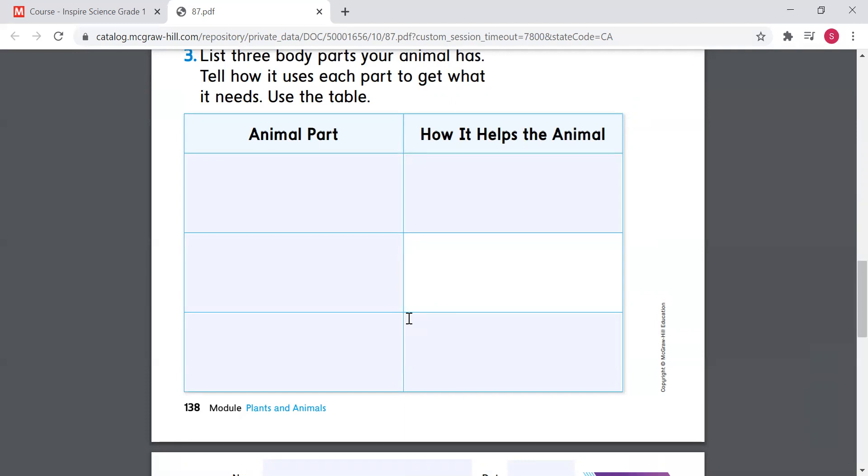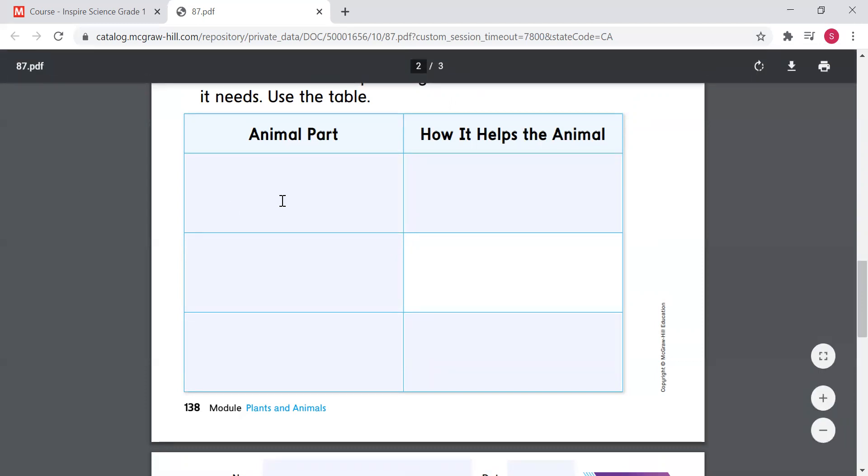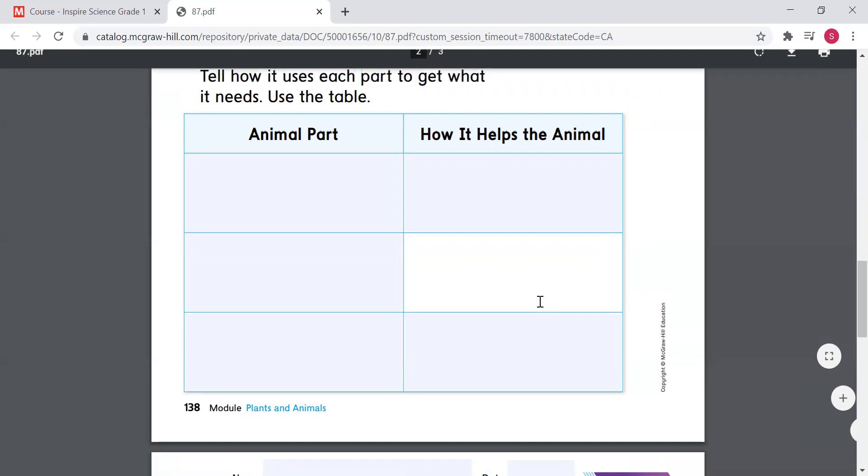For you, you can say you choose something else. Let's say if you put the body part mouth to help the cat or the dog to eat, you can choose here the legs. And you can say the hands and legs, the animal part. And over here, how does it help the animal? Help the animal to run and move.